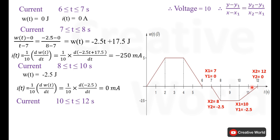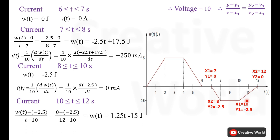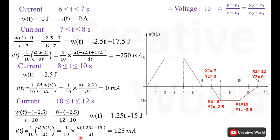Between time interval 10 and 12 seconds, using the straight line equation we calculate the energy. Here x1 and y1 are 10 and −2.5 respectively, and x2 and y2 are 12 and 0. Entering these points into the straight line equation, we get energy = 1.25T − 15 joules. Taking its derivative, we calculate the current as 125 milliamperes.